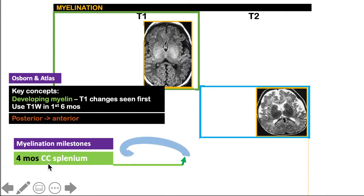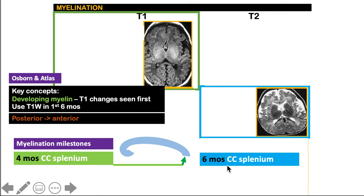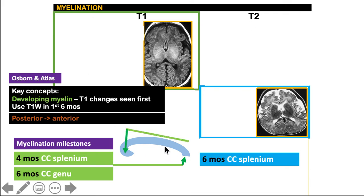Let's talk about the corpus callosum. At birth, the corpus callosum is not yet myelinated. The T1 changes occur in the posterior region first — specifically, in the splenium, we see hyper-intense signal on T1 at four months, and then T2 changes come later at six months. Then T1 changes appear in the anterior portion, which is the genu, at six months, and the T2 changes follow at eight months.